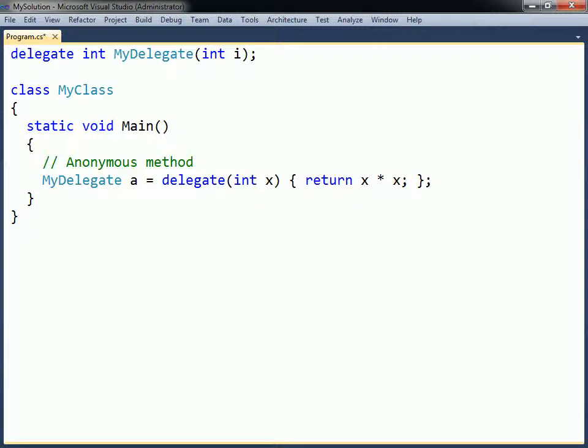C-sharp 3.0 went one step further and introduced lambda expressions. They achieve the same goal as anonymous methods, but with a more concise syntax.